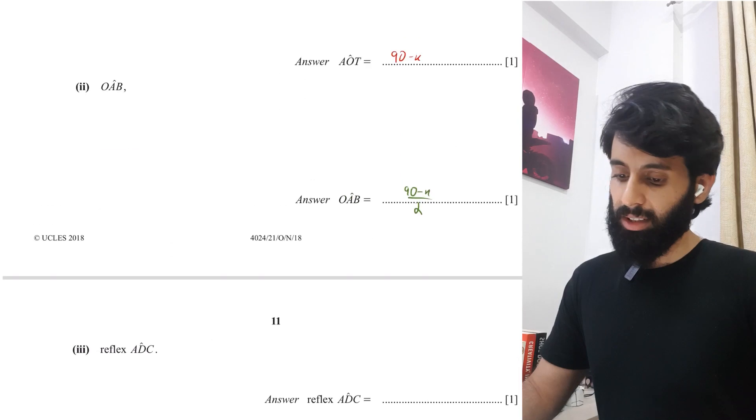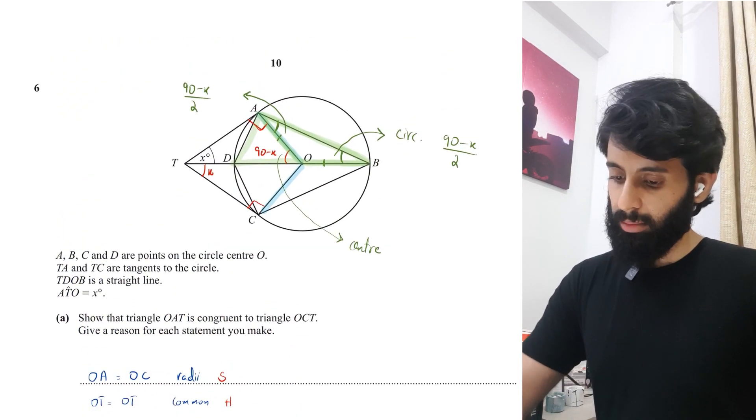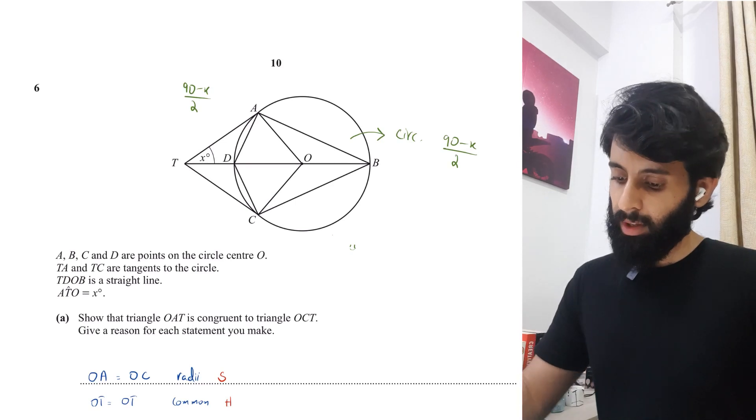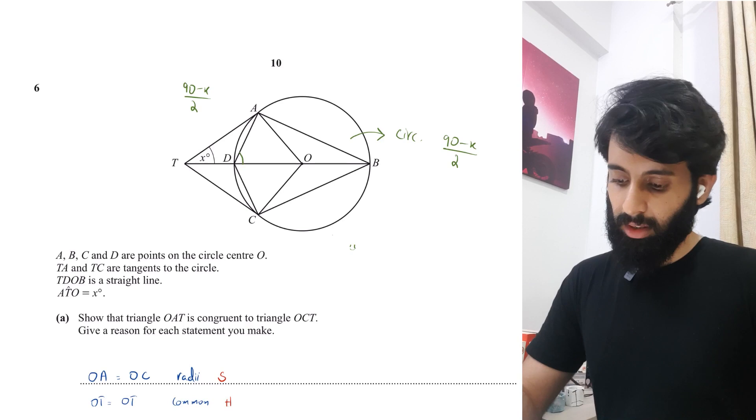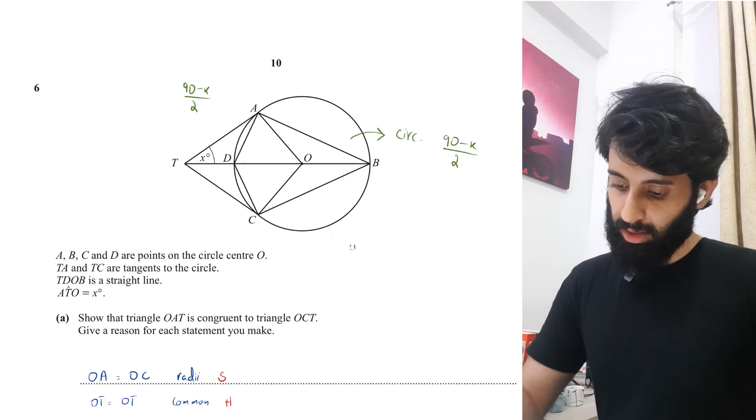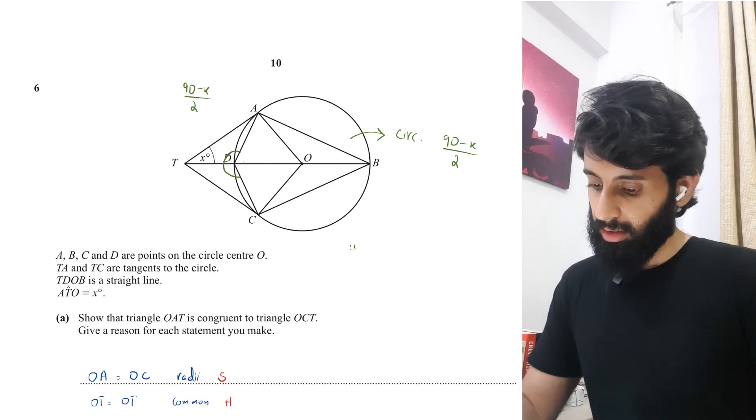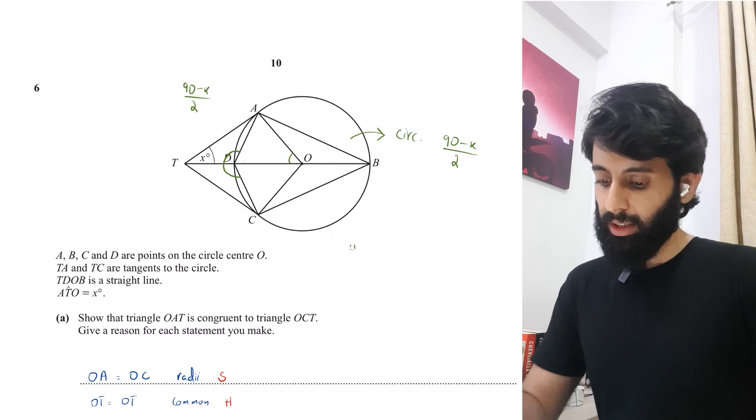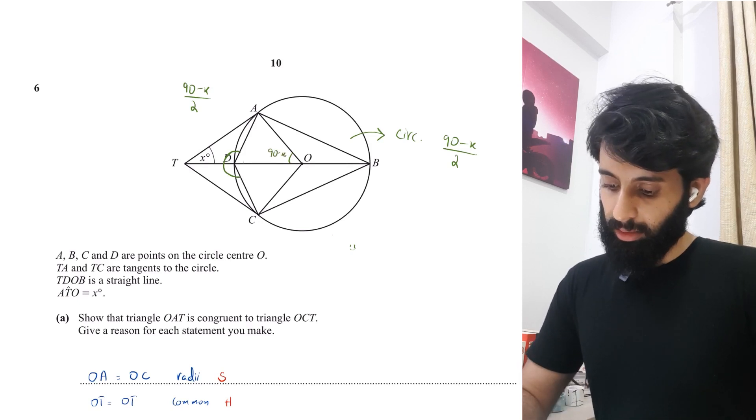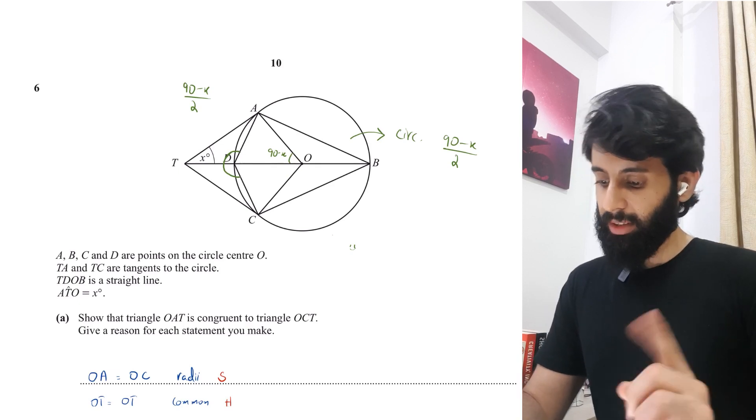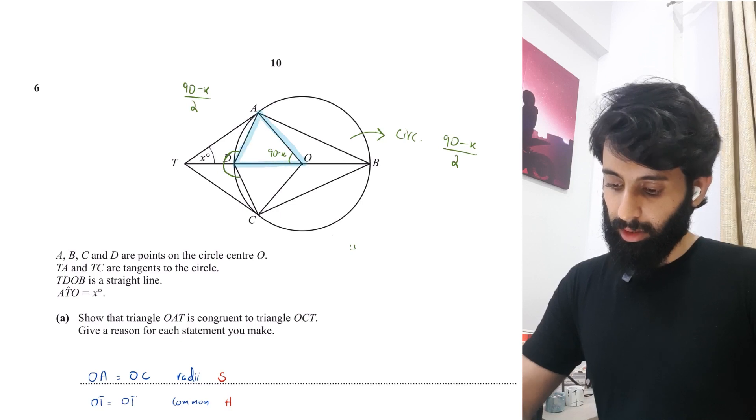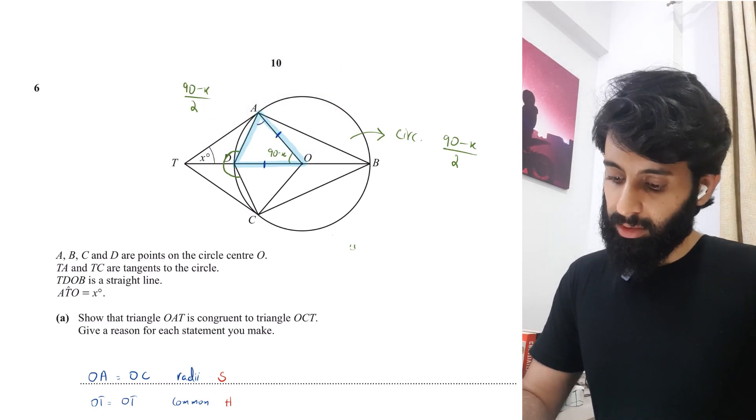Then you have reflex angle ADC. Let's go back and have a look at ADC. Let me just clear the mess that I've made here. Reflex angle ADC is basically going to be this angle. Reflex angle, remember, is the angle that's greater than 180 but less than 360. Let's see how this can be worked out. I'm going to be focusing on this triangle only.